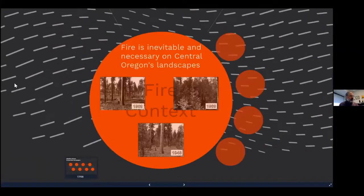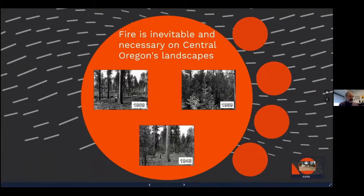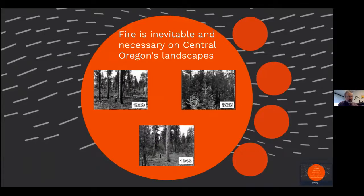We're going to dive right in and start with a bold statement: fire is really here to stay in Central Oregon. It's been part of the landscape for millennia, and fire frequency has changed over time, but fire is not going away. We don't really have a no-fire option here. Our ecosystems, weather, and fuels are just adapted to fire. Our choices are really what kind of fire we're going to have on the landscape and how that fire is going to affect our communities.